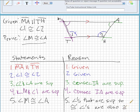And there's our proof. We've proved that angle M and angle A are congruent on a two-column proof.